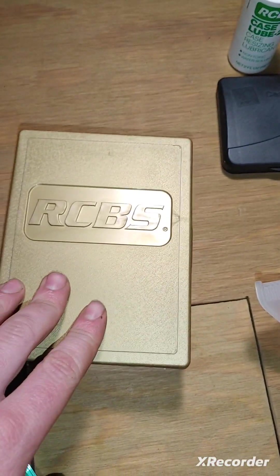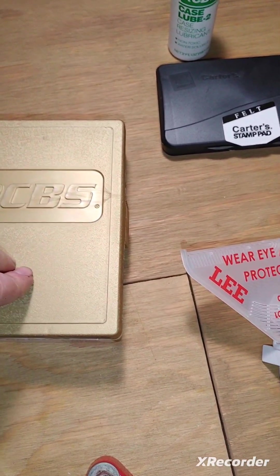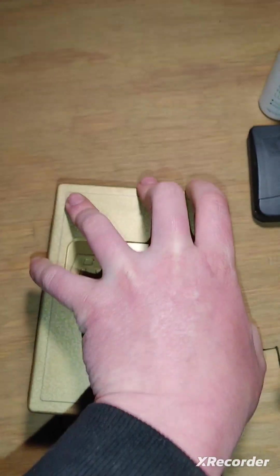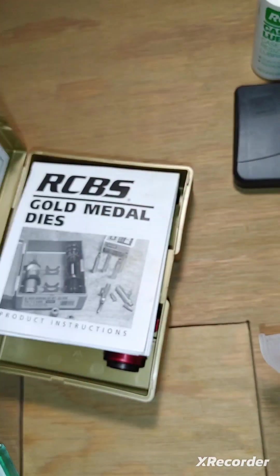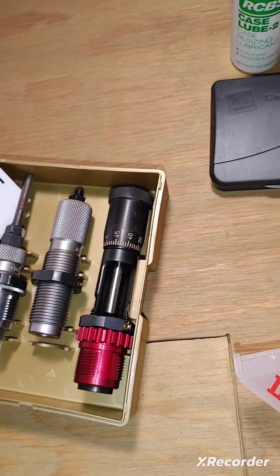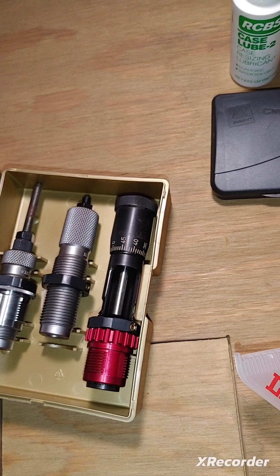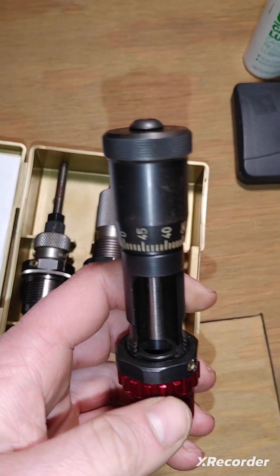Now we've got our dies. I purchased the RCBS gold metal die sets. Those obviously vary in price depending on what size die you get. They can be anywhere from 109 to 160 dollars. This is what it looks like.